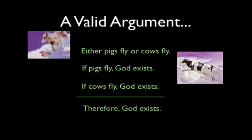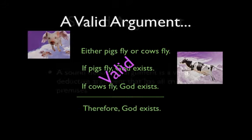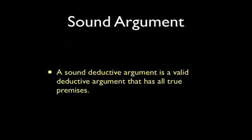Strictly speaking, there's nothing wrong with the logic of this argument. If the premises were true, the conclusion that God exists would have to be true. However, no one would accept the conclusion that God exists on the basis of the premises in this argument. That's because at least one of the premises is false. A valid deductive argument is not compelling unless all of its premises are true, in which case we say we have a sound deductive argument.